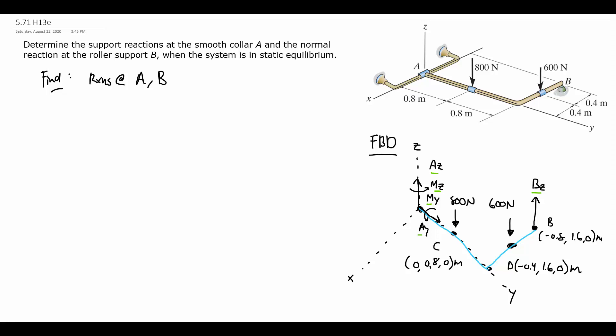Now we can move on to our equilibrium equations. Since every force and couple in the free body diagram is acting along a coordinate direction, we don't need any unit vectors for this problem — everything is along X, Y, or Z only. So we can jump right into the equilibrium equations, doing the force equations as scalars along each coordinate direction.